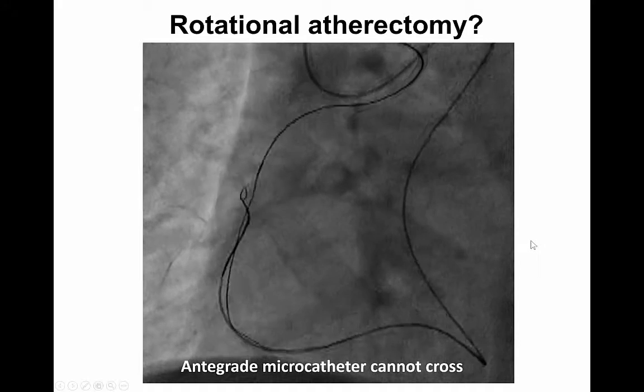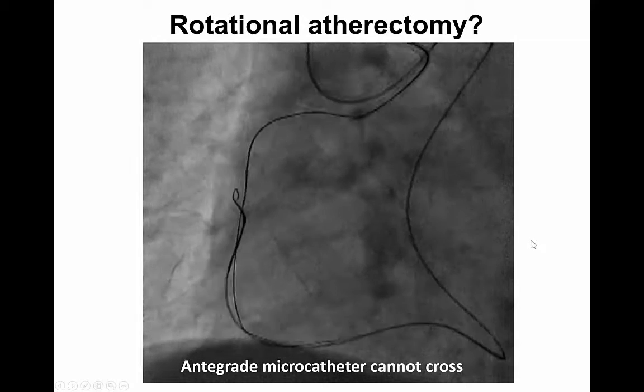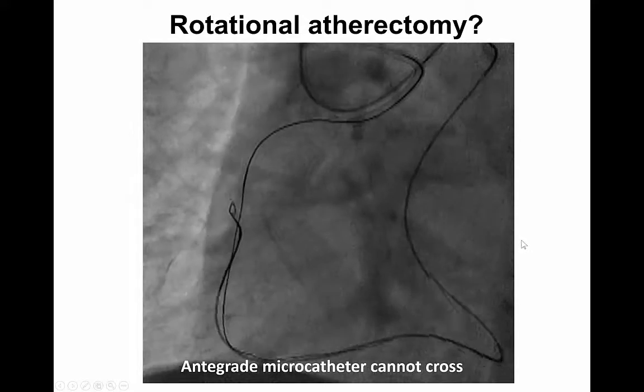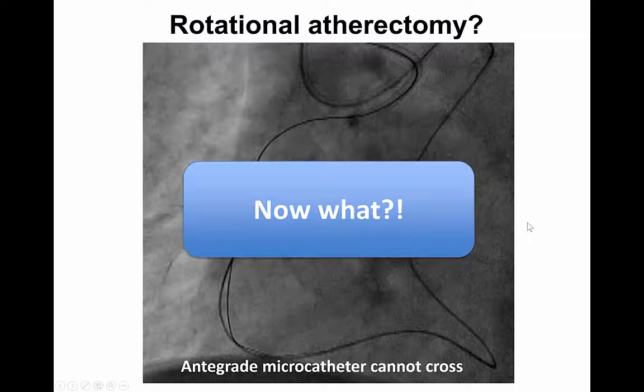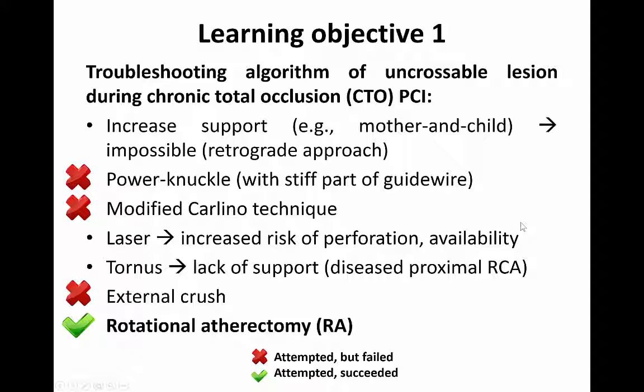At this point we considered performing rotational atherectomy. However, the antegrade microcatheter to allow a guidewire exchange for the rotowire could not cross. So, what is the troubleshooting algorithm of an uncrossable lesion during CTO-PCI? First, you have to consider increasing support, for example with a mother-and-child system, but this was not possible because this was a retrograde procedure. We tried a knuckle with a stiff part of the guidewire and failed, as we also failed with the modified Carlino technique. We tried external crush — advancing a wire parallel to the first guidewire antegradely to perform external plaque modification — but we couldn't advance any small balloon to perform this.